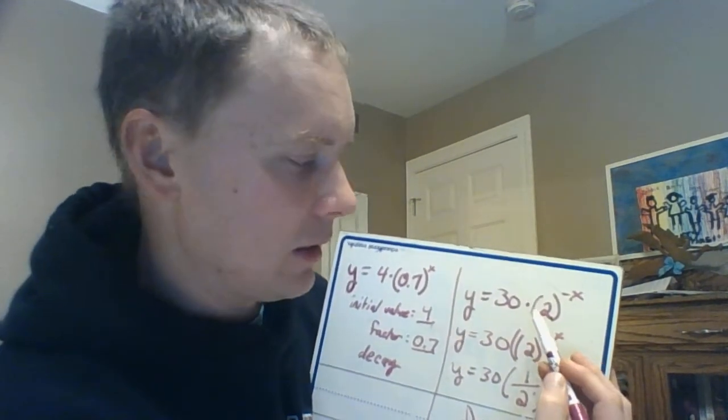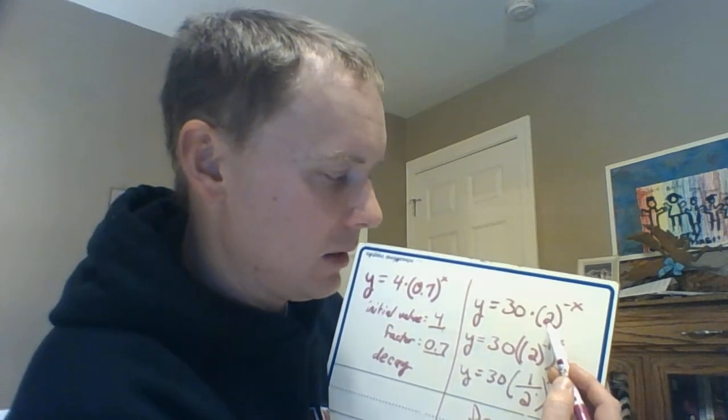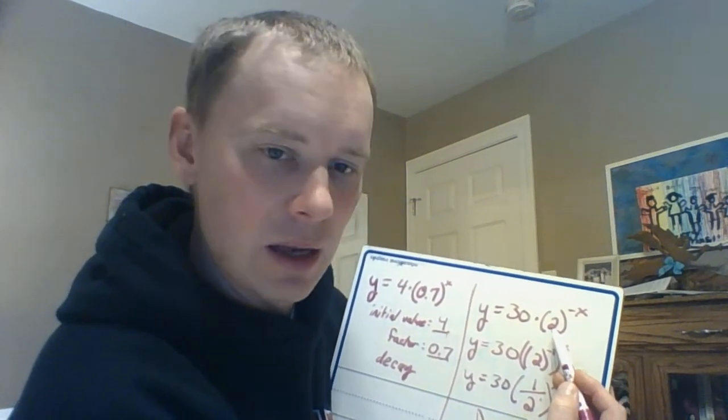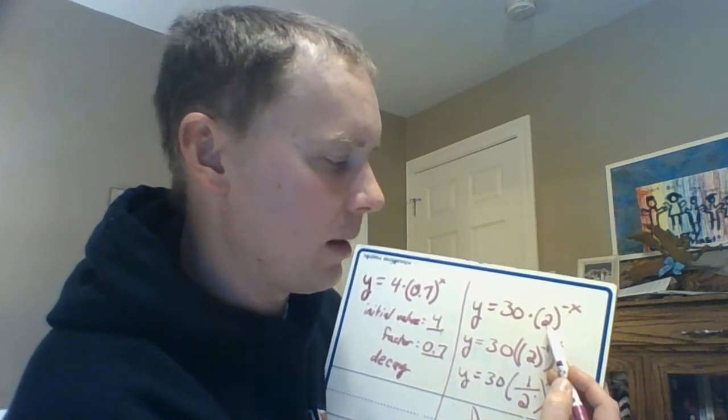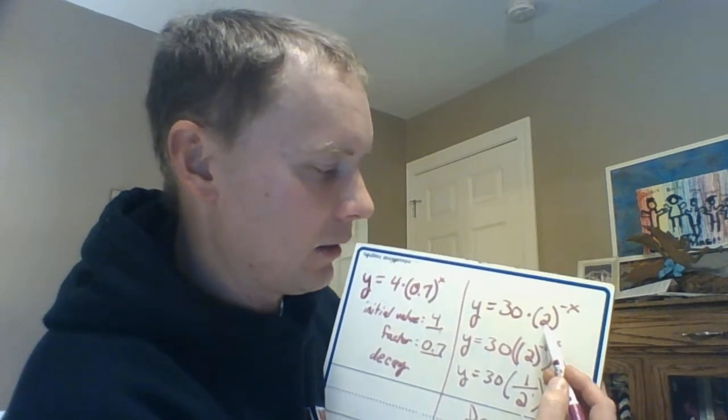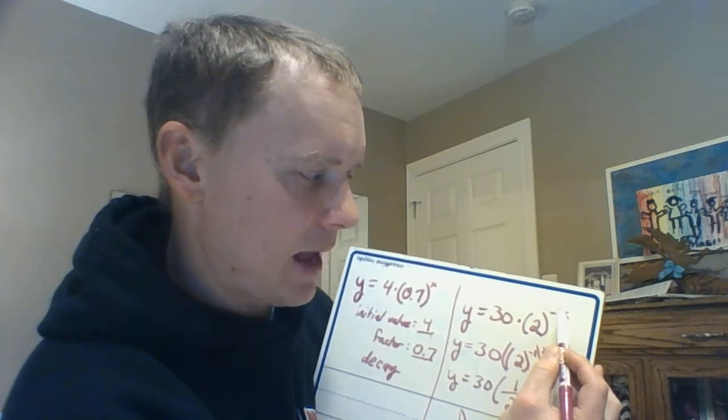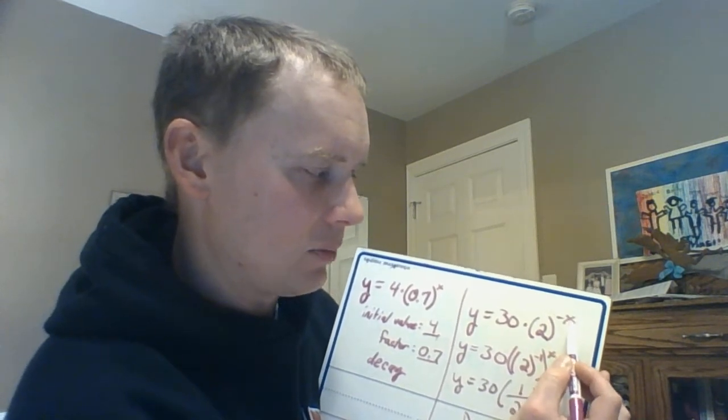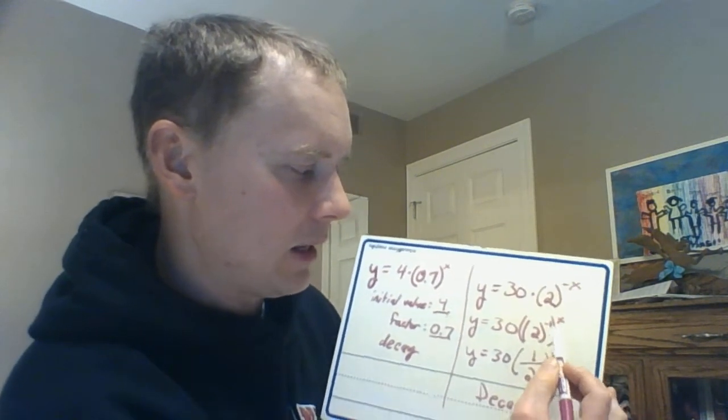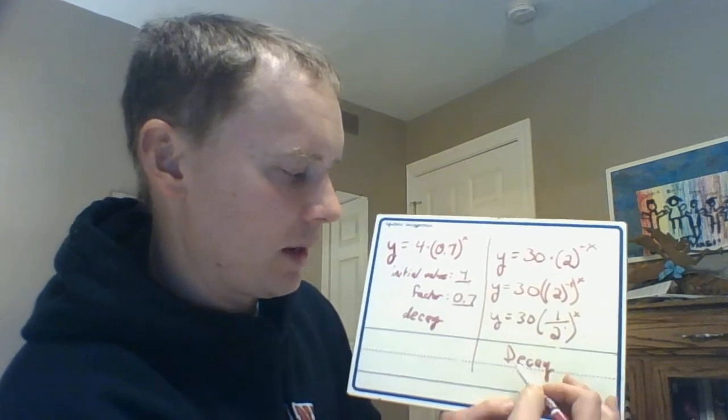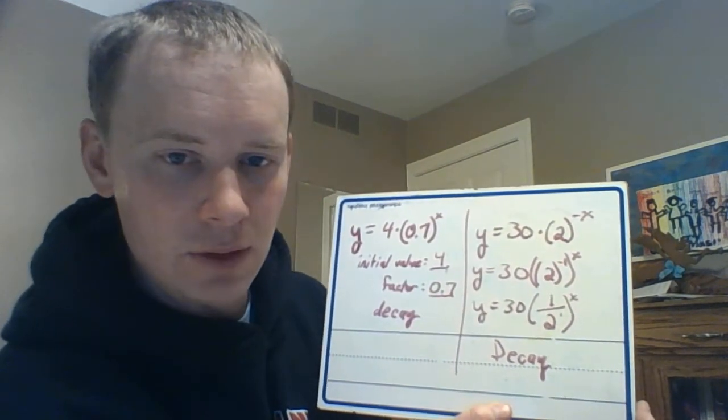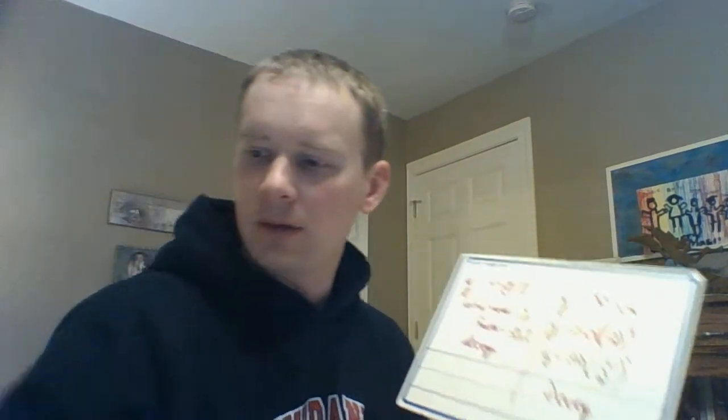When you initially looked at this, that number being greater than 1 might indicate you initially would think, oh that means it's a growth exponential function. But in order for us to tell, we have to have just an x exponent here. We can't have that negative with it. And so when we work that out, we recognize that this is in fact a decay function.